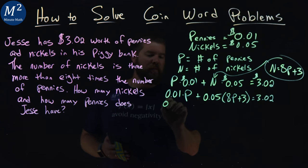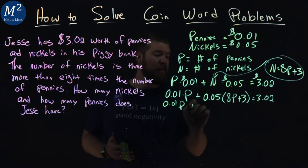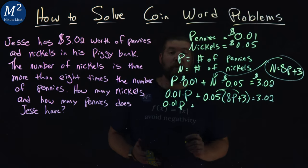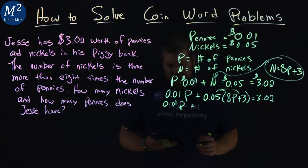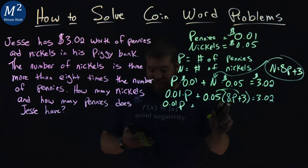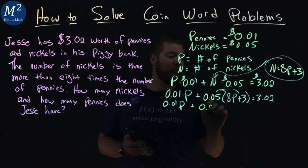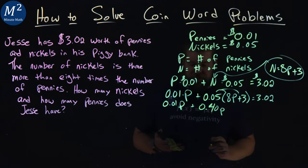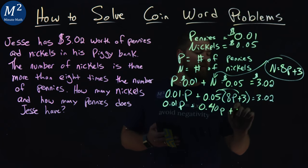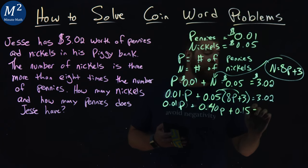We have to multiply some things out. Let's leave the 0.01p. Let's multiply 0.05: 0.05 times 8 is 0.40p, and 0.05 times 3 is 0.15.